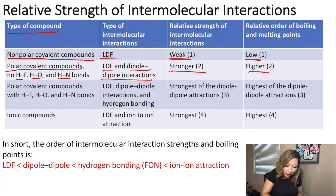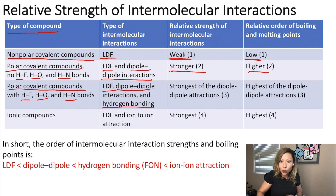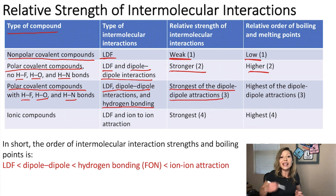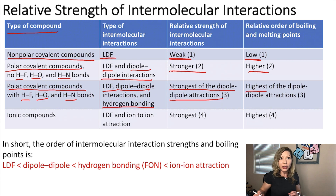If we move on to polar covalent compounds that do have HF, HO, and NH bonds, we add hydrogen bonding to the previous list. Here we get the strongest intermolecular attractions among dipole-dipole type compounds, and correspondingly higher boiling and melting points.